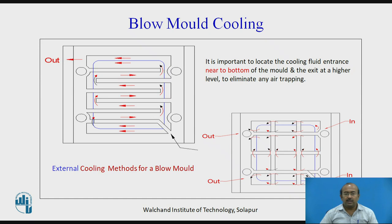For blow mold cooling in more detail, it is important to locate the cooling fluid entrance near the bottom of the mold and the exit at a higher level to eliminate any air trapping. External cooling methods for blow molds can also be considered. Two different channels are used for flowing the water — one entering from the bottom and exiting at the top, and a second one circulating peripherally around the mold.